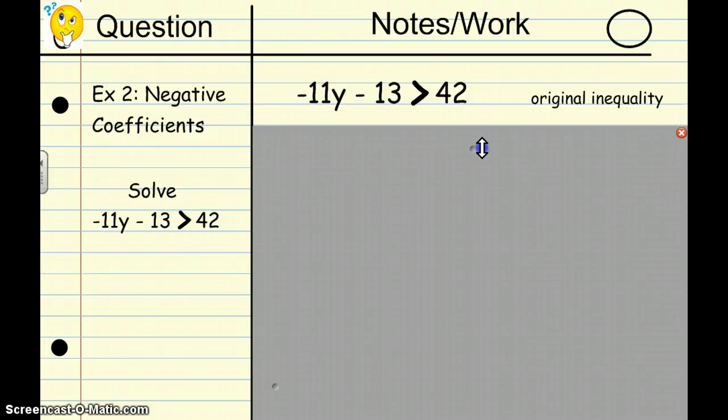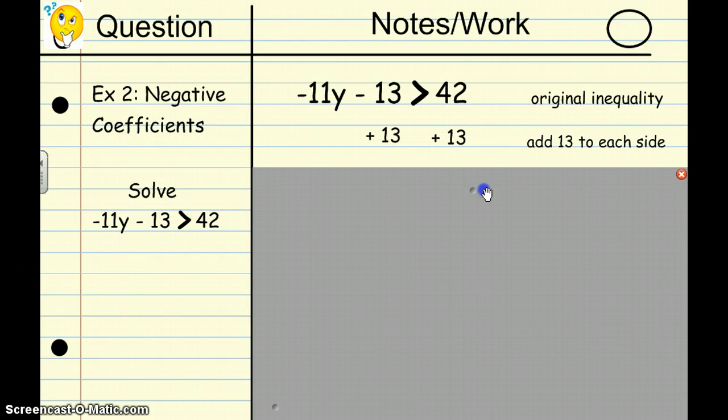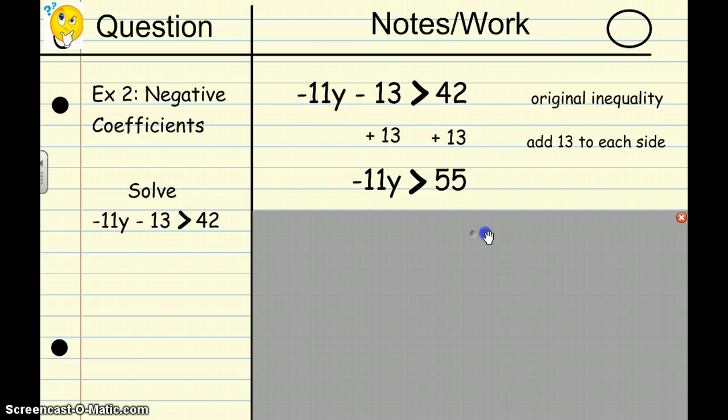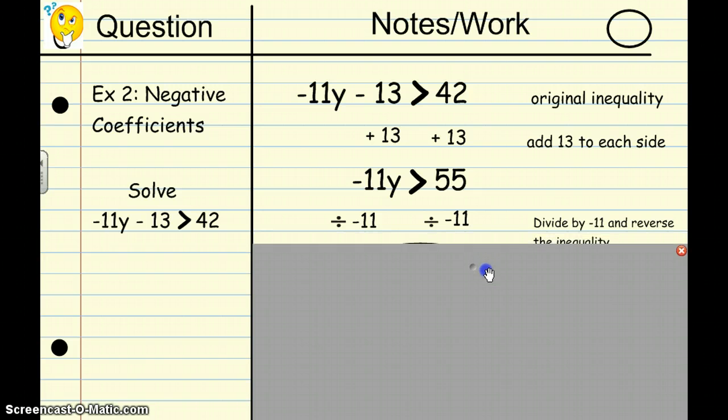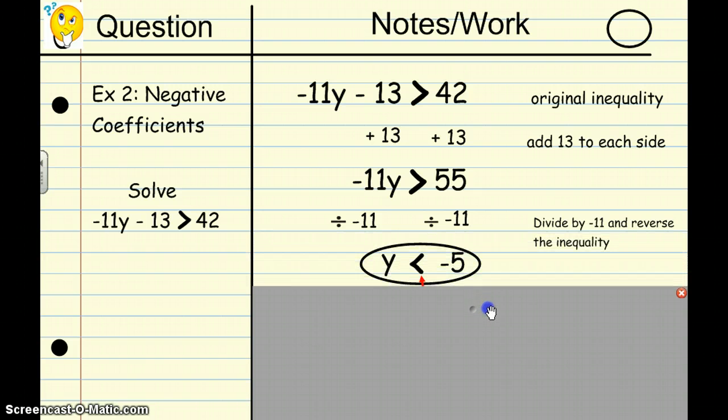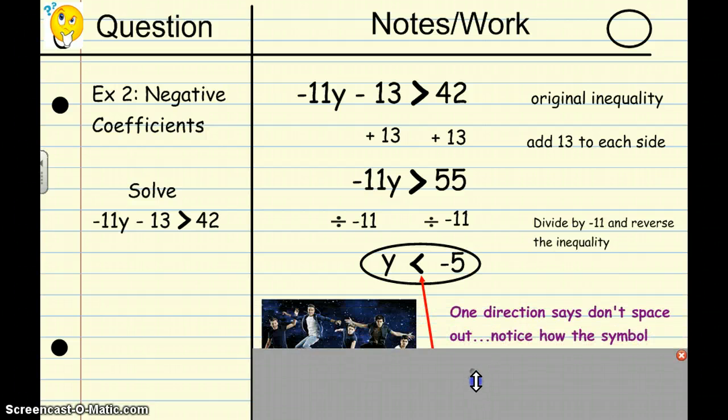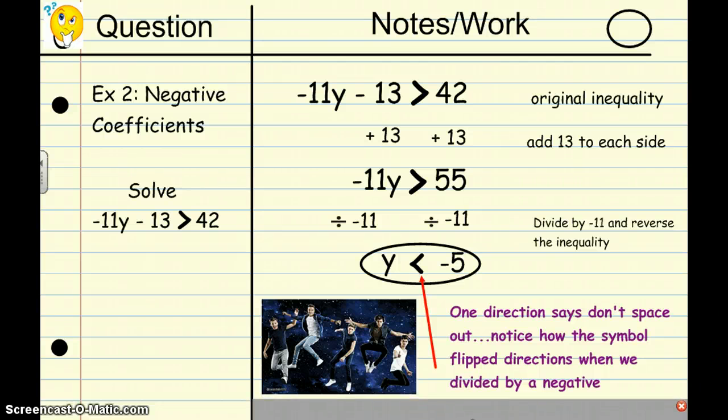Here is the original inequality. You should know by now your first step is to add 13 to both sides. Next, you should have negative 11Y is greater than 55. Here is the dangerous part. You know you need to divide by what is in front of Y, but since it is a negative, you need to reverse the inequality. Do you see that flipping? The sign changed direction. One direction says, don't space out. Notice how the symbols flip directions when we divide by a negative. Don't forget that.